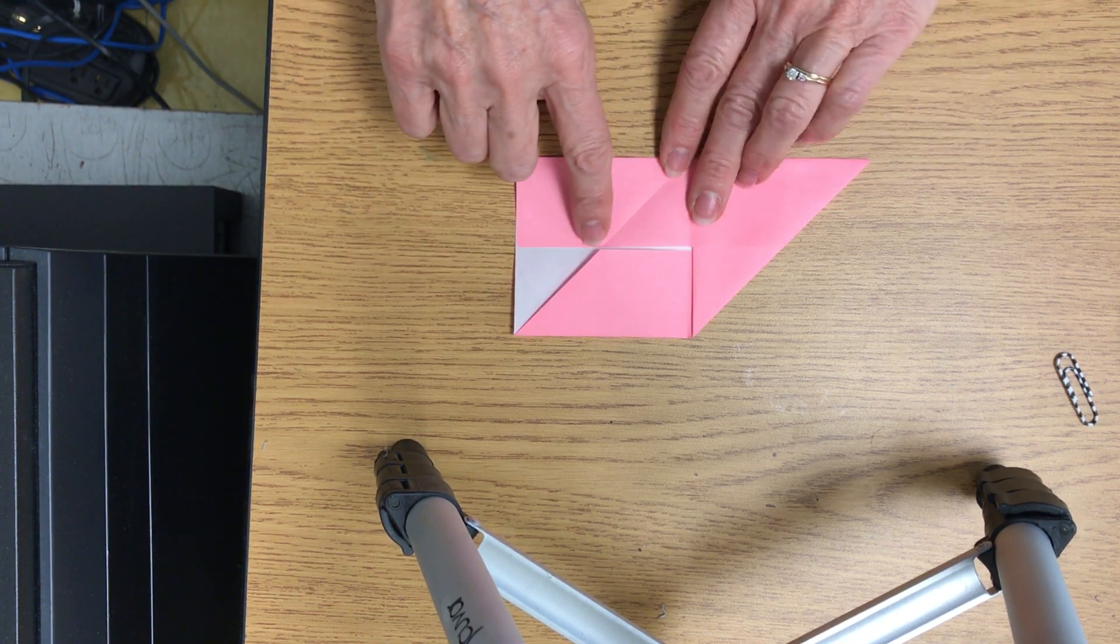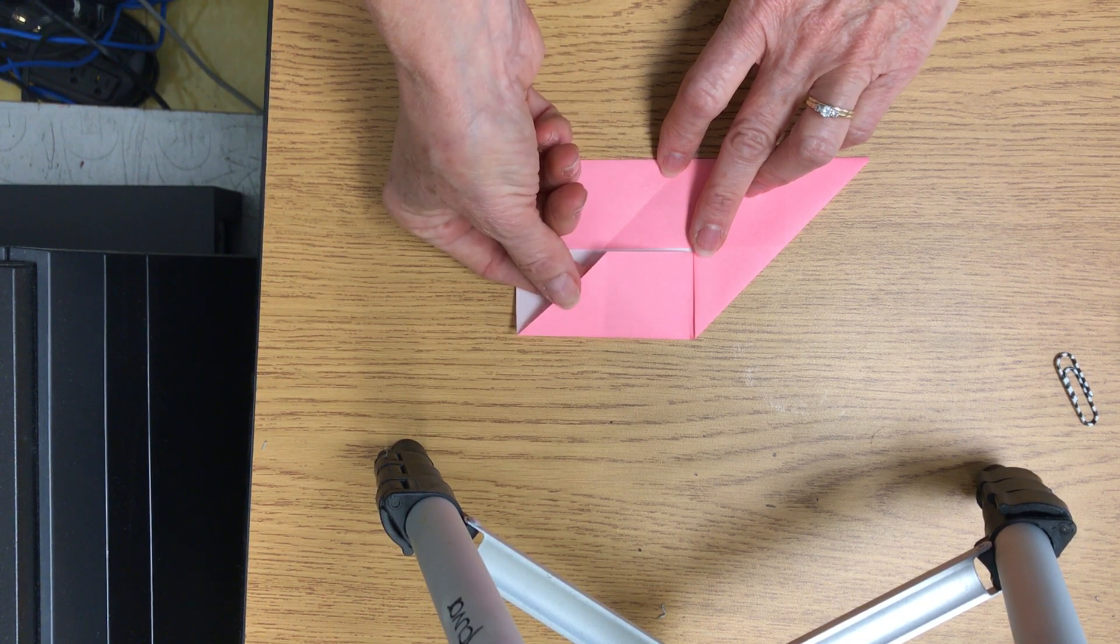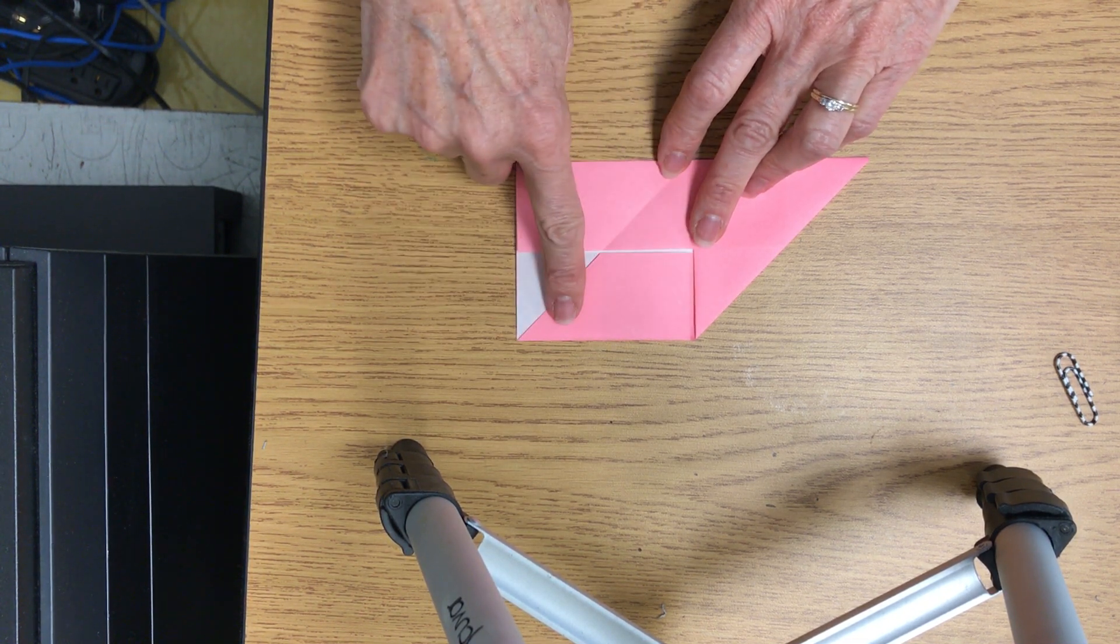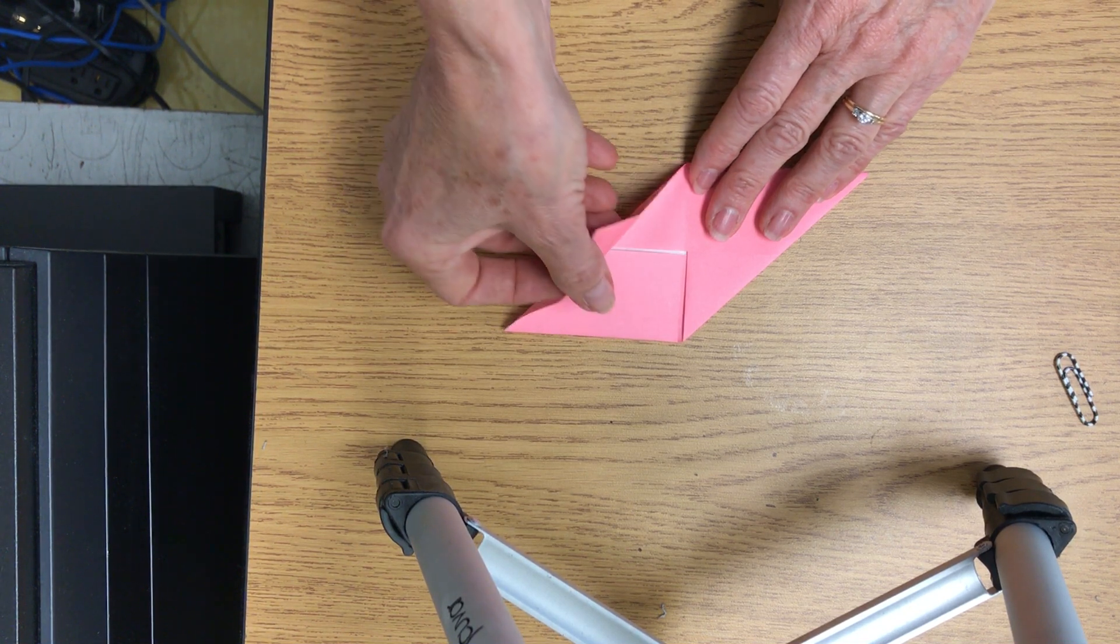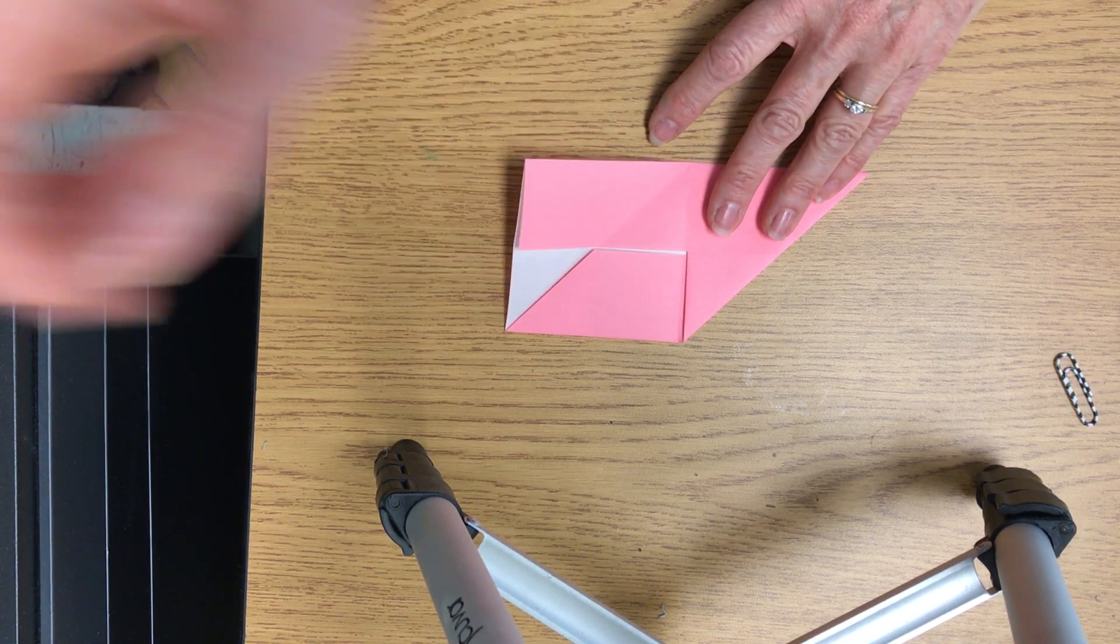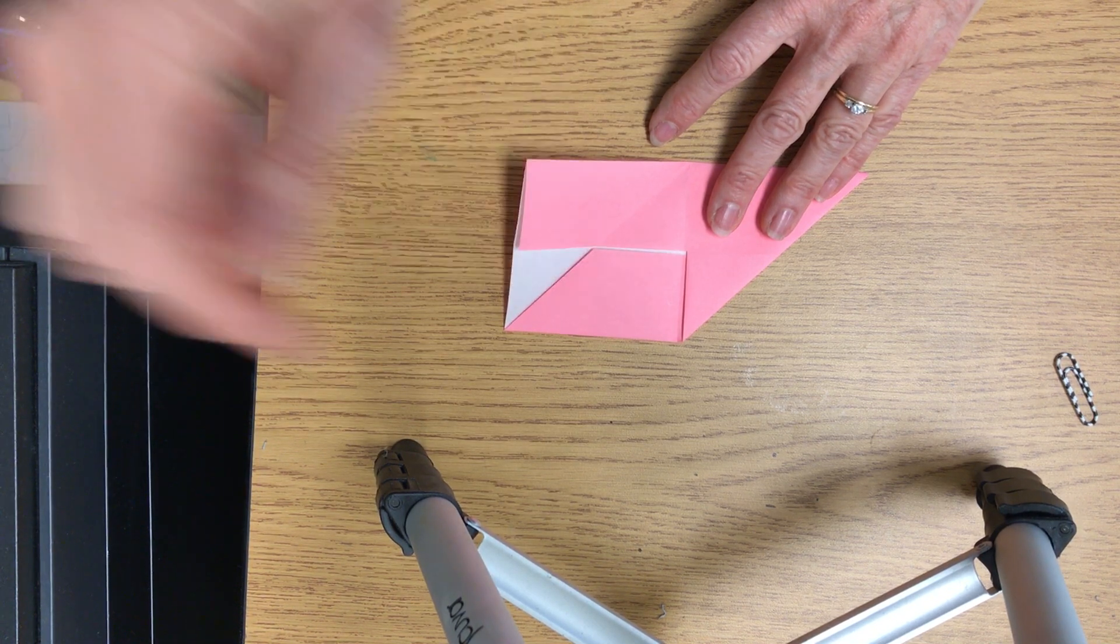Now, you notice on this side I have this little pocket. See that pocket there? So I'm going to take my flap and I'm going to tuck it inside this pocket.